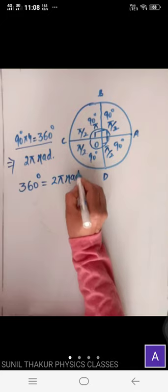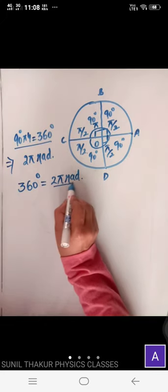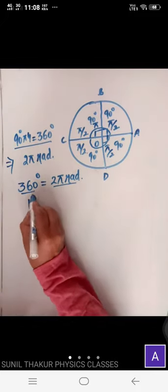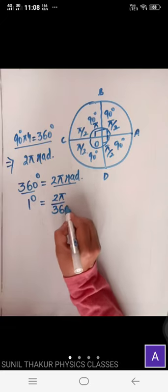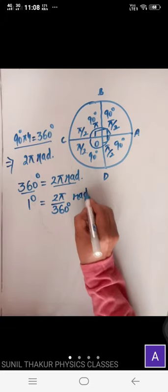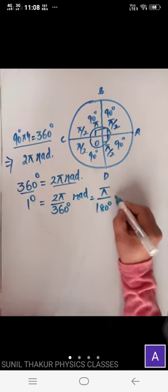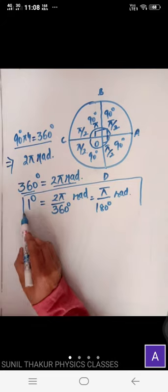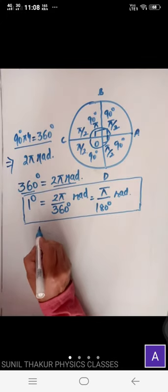So we establish that 360 degrees equals 2π radians. Therefore, 1 degree equals 2π divided by 360 radians, which simplifies to π/180 radians. This is the conversion factor from degrees to radians.